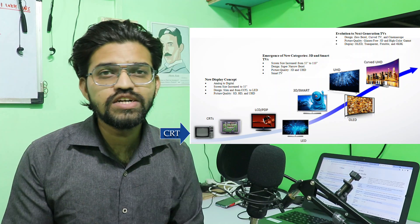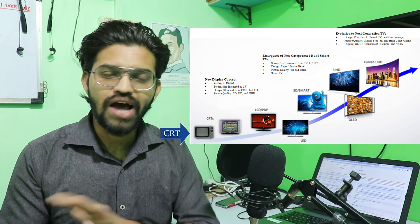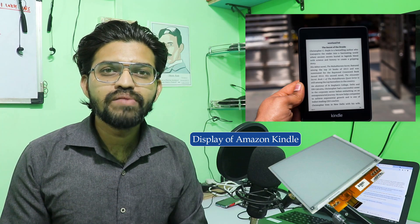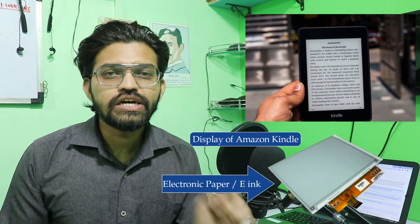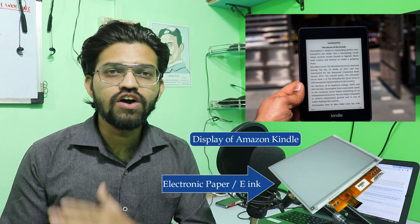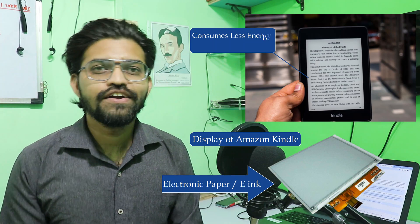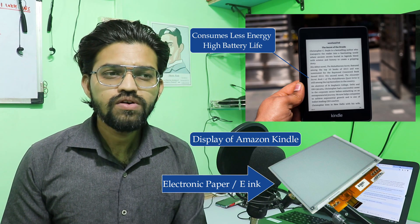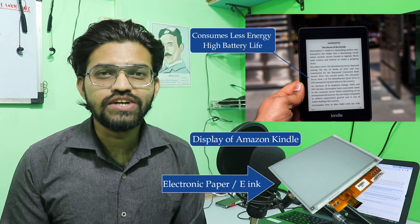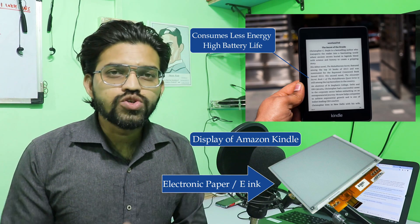There are several types of displays like QHD, FHD, and OLED, but today I am going to talk about the Amazon Kindle's display - the electronic paper, which can also be termed as e-ink. This display has unique properties: it consumes less power such that its battery can last up to four weeks if you read for half an hour per day.